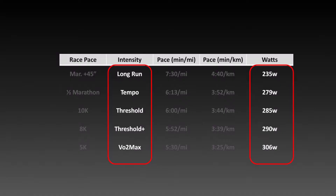For this training cycle, all I needed to do was look at these training intensities, because all of my workouts are going to be either long run, tempo, threshold, threshold-plus, or VO2 max. The corresponding wattage targets are 235, 279, 285, 290, and 306 watts.